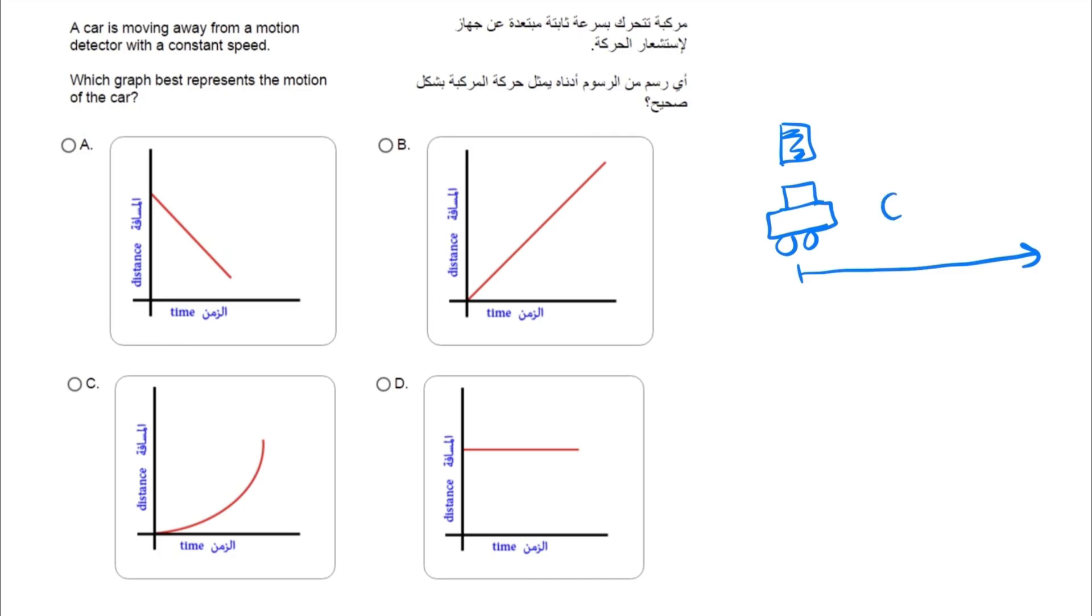Now if you take a look at the options that you have, all of these options are represented by a distance-time graph. So we are dealing with a distance-time graph to represent our motion.